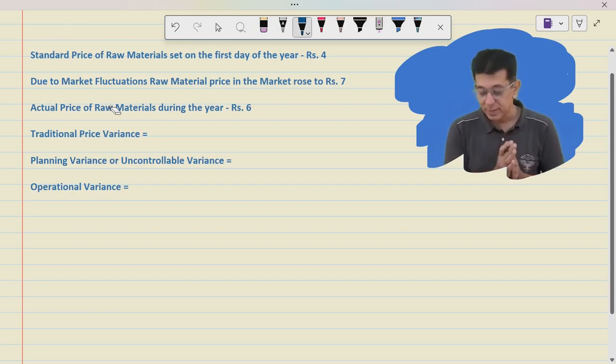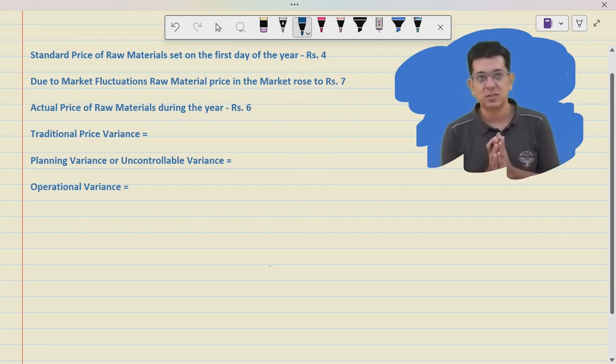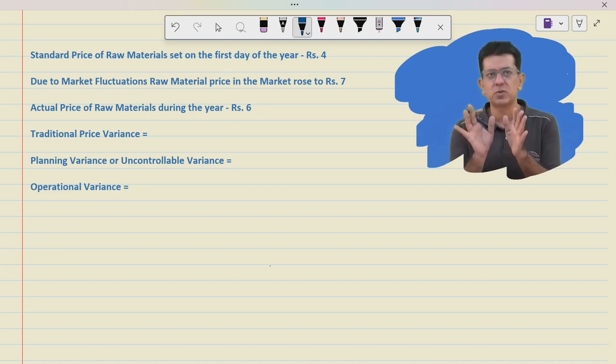Let's try to study them. So think it off. I am trying to talk of material variances. On the first day the company set the standard price of raw material that was rupees 4.